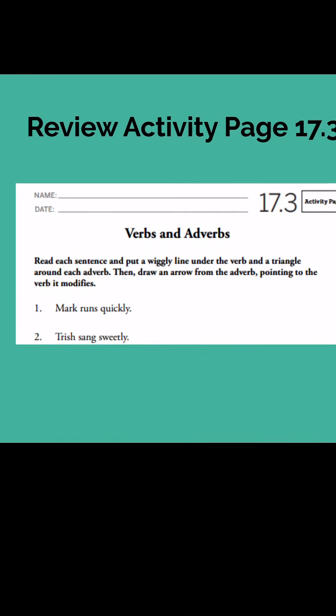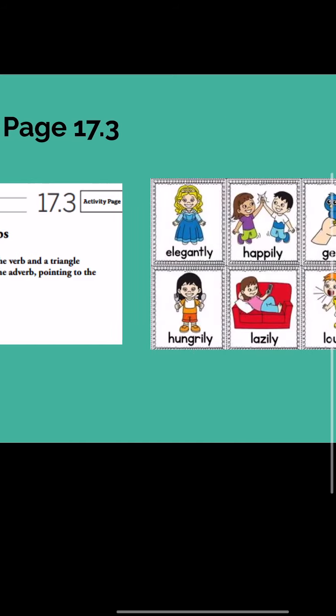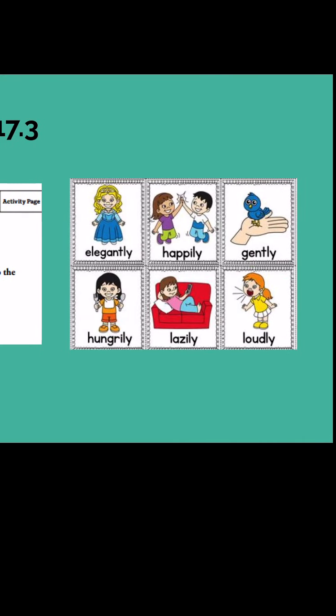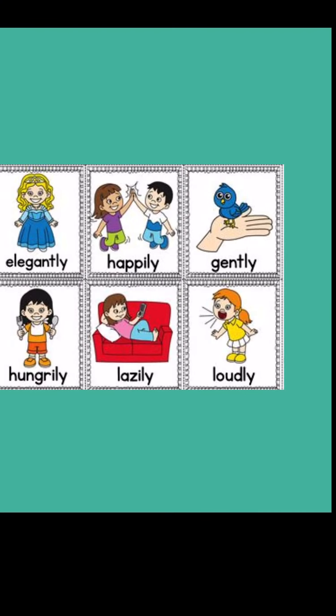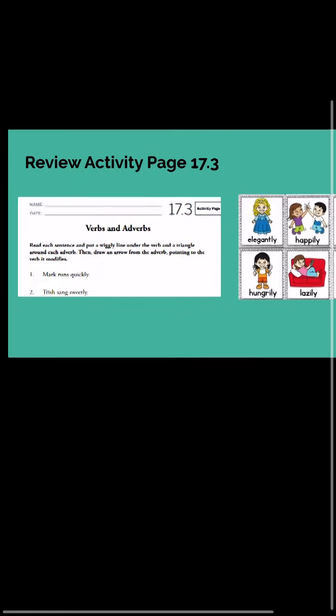You need to read the sentence and put a wiggly line under the verb and a triangle around the adverb. Then draw an arrow from the adverb pointing to the verb. Remember, an adverb is a word that describes a verb. For example: 'I held the bird gently.' 'Held' would be the verb in that sentence, and 'gently' would be the describing word — that's how you held the bird.